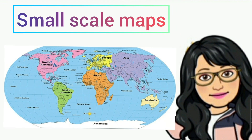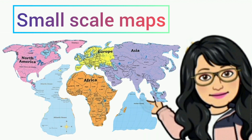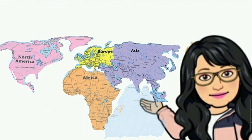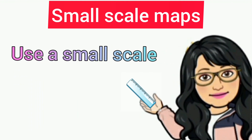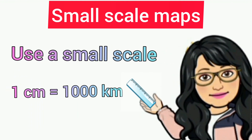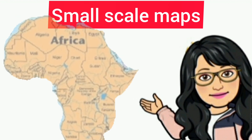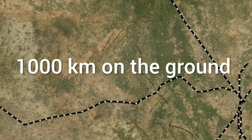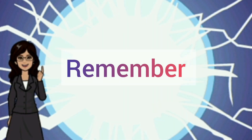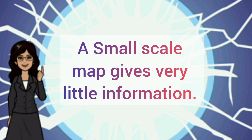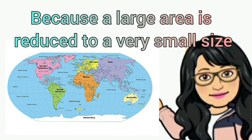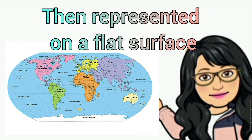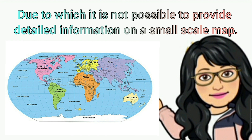A small scale map refers to world maps or maps of large regions such as continents, large oceans, etc. In other words, they show large areas of land in a small space and use a small scale such as 1 cm equal to 1000 km, which means 1 cm on the map shows 1000 km on the ground. One important thing to remember is that a small scale map gives very little information, because a large area is reduced to a very small size and represented on a flat surface, due to which it is not possible to provide detailed information on a small scale map.